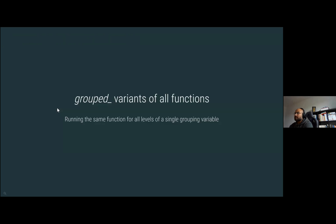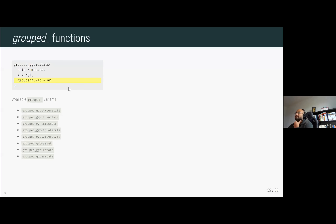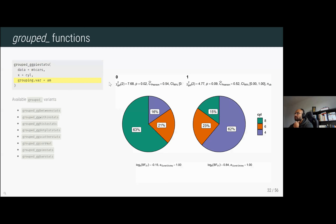All of these primary functions come with grouped variants, making it easy to run the same function for all levels of a single grouping variable. For example, if I want to run gg_histostats separately for each level of the 'am' variable — since 'am' has two levels, zero and one — the same function will be run for each level and the plots will be combined and returned to you. This grouped variant is available for all functions in the package.